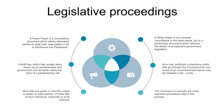In practice, the Lords' amendments can sometimes lead to the acceptance of changes by the government or even a withdrawal of the bill. When the bill has eventually passed through the Lords, it is sent to the monarch for the royal assent, which hasn't been refused since the 18th century.